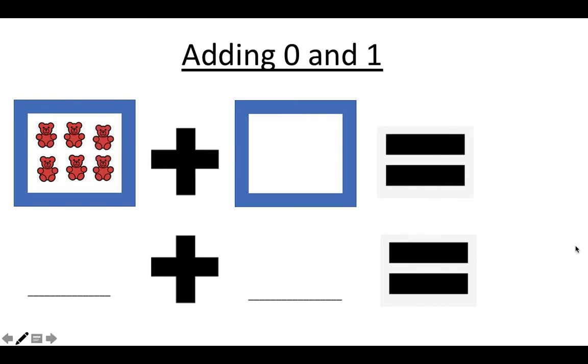Let's try the next problem. This time we have one, two, three, four, five, six teddy bears. We're going to put a six on this first line here. We're adding zero more bears. If we start with six and we don't add any more, we still have six teddy bears. Six plus zero equals six.